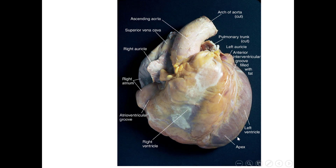The heart is pyramidal in shape with its apex being the pointed end of the heart. This apex is located over the left fifth intercostal space — remember this level: left fifth intercostal space. It is directed downwards, forwards, and to the left.